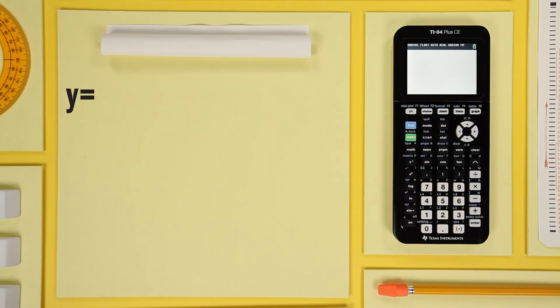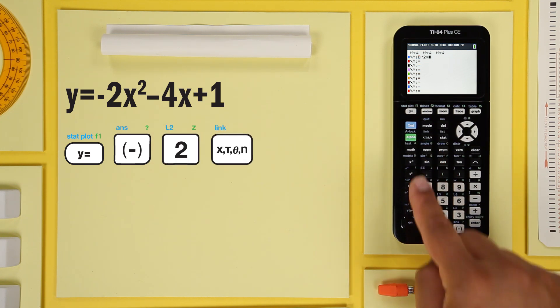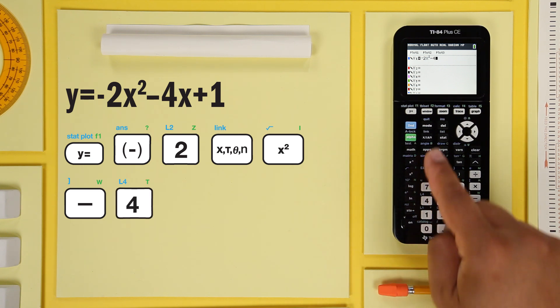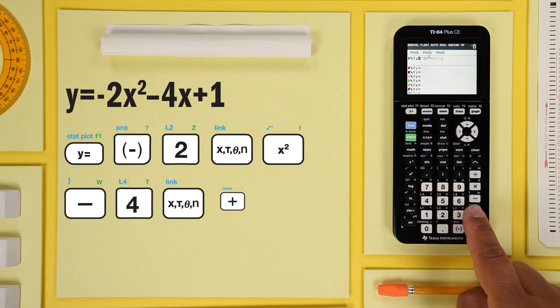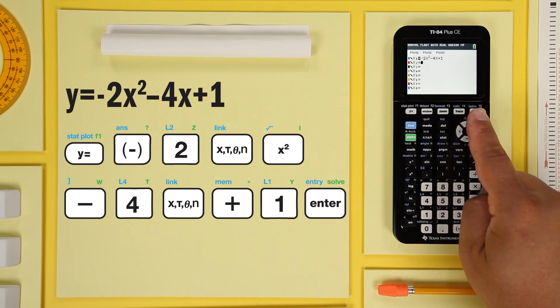Let's graph y equals negative 2x squared minus negative 4x plus 1. Enter and graph.